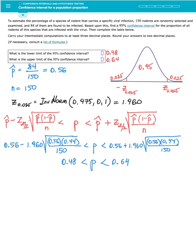And 84 of them are found to be infected. Based upon this, find a 95% confidence interval for the proportion of all rodents in this species that are infected with the virus. Then complete the table below. Carry your intermediate computations to at least 3 decimal places and round your answers to 2 decimal places.